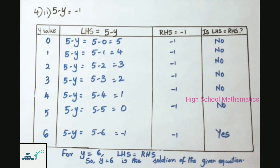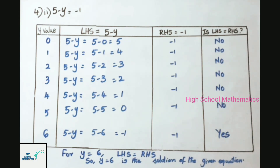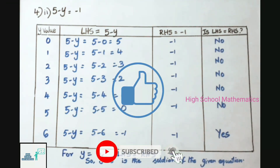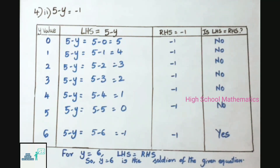For y = 6: LHS = 5 − 6 = −1; RHS = −1. Both LHS and RHS are equal. So y = 6 is the solution of the given equation. Today we have seen Chapter 3 Simple Equations, Exercise 3.1, all sums. Hope you all liked this video. Please like, share with your friends, and subscribe to our channel. Thank you for watching.